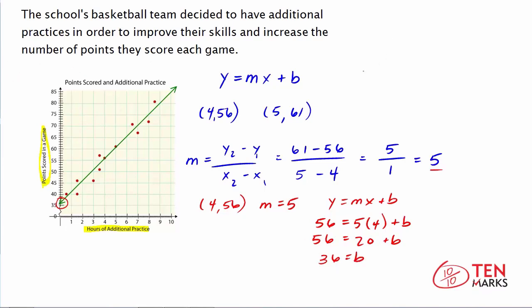So now the equation for this line is y equals 5x plus 36. And this line summarizes the relationship between the number of hours that are spent in practice and the number of points that are scored in a game.